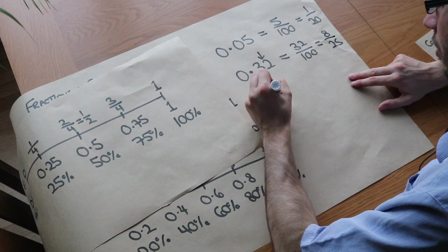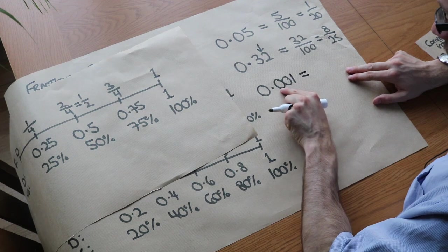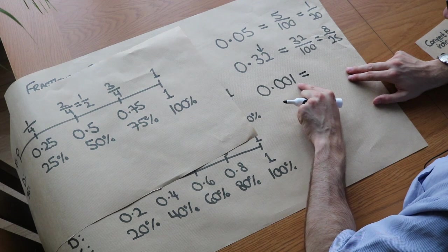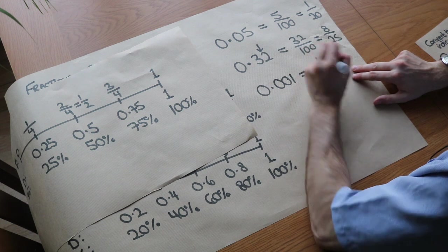What about 0.001? Well, that's the tenths digit, that's the hundredths digit, that's the thousandths digit. So this would be one over a thousand.